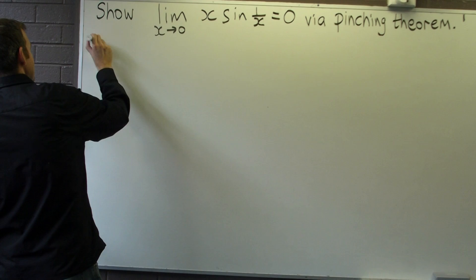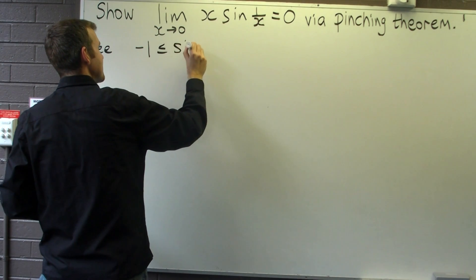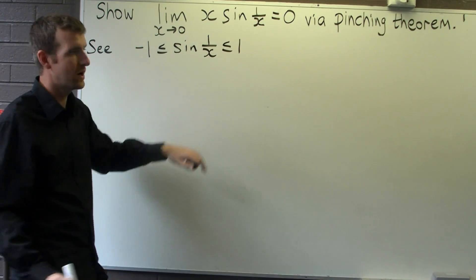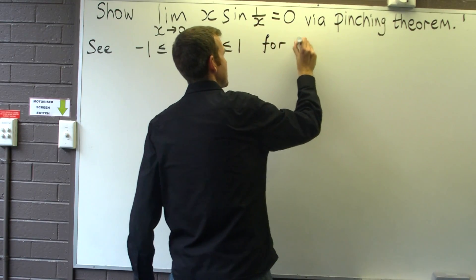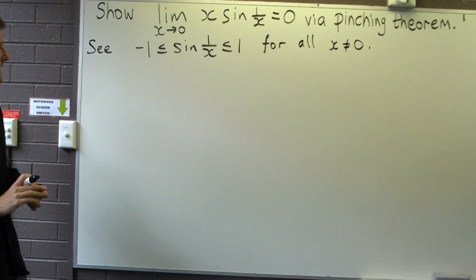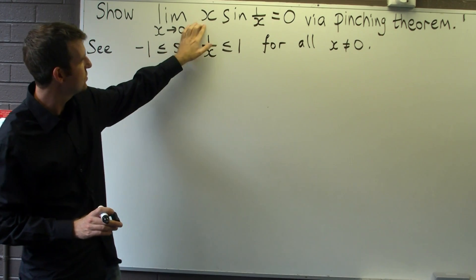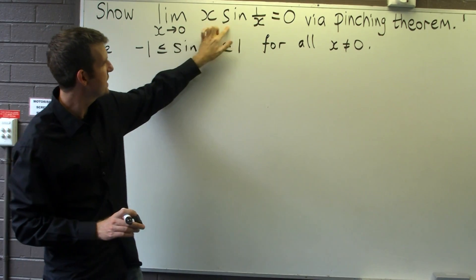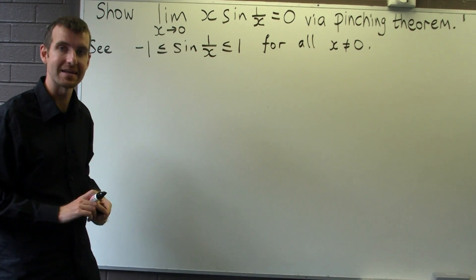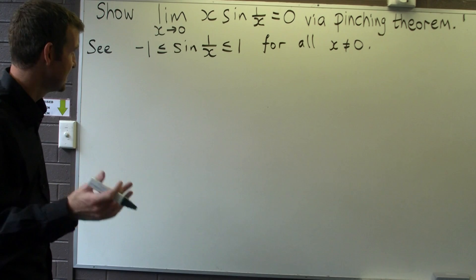Well yes there are. We know that the sine function lies between minus 1 and 1. What we're trying to do here is get this middle part to look like x·sin(1/x). A tempting technique would be to multiply through by x, but you need to be careful here with the inequalities because you don't know if x is positive or negative, so we're going to try the following.